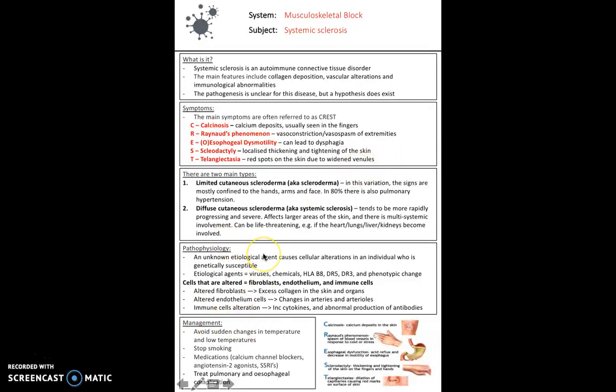The pathophysiology, as we've said, is fairly unknown, but for a suspected hypothesis, usually it's an etiological agent like virus, chemical, some form of HLA or phenotypic change which causes this to happen. Several cells are altered: fibroblasts, the endothelium, and immune cells leading to the symptoms. Altered fibroblasts cause excess collagen in the skin and organs. Altered endothelium cells cause changes in the arteries and arterioles. And immune cell alteration leads to increase of cytokines and abnormal production of antibodies.